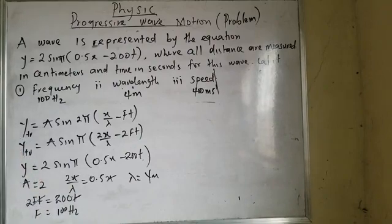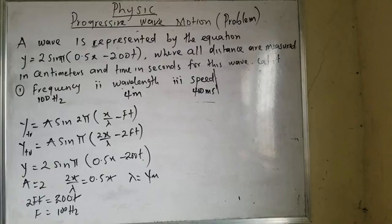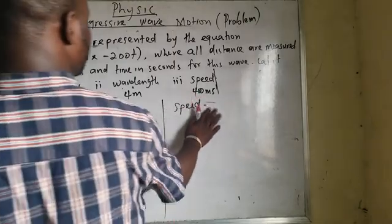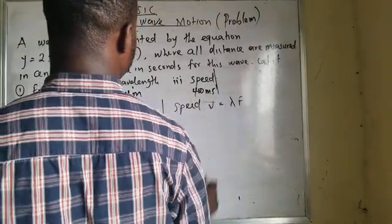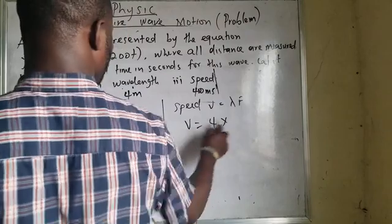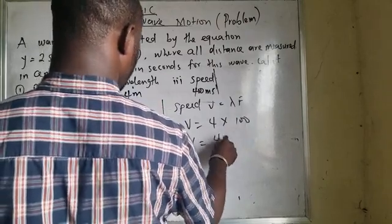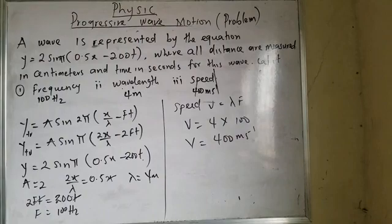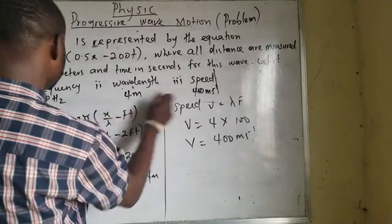Since I know that, I can answer that my speed, which is my v, equals lambda f — my lambda f. So v equals my lambda 4 multiplied by 100, which gives my speed. Can you see? I have the same answer, the same answer for each of them using equation 1 and equation 2.